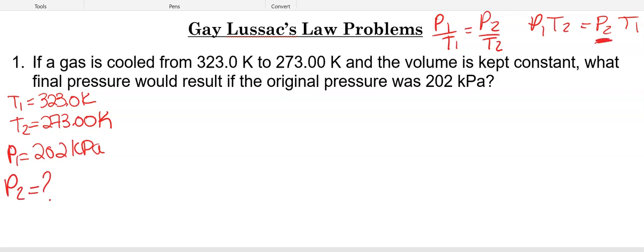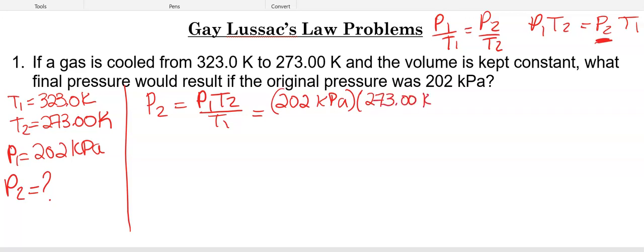So in this equation, we're solving for P2. So P2 is going to be equal to P1 T2 divided by T1. So plugging in P1 times temperature 2, and then dividing by T1. So now we've identified our variables over here. We rearranged our equation. We've plugged our numbers into the equation.